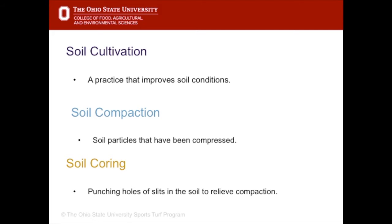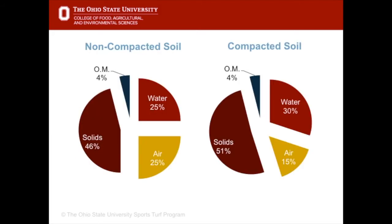Soils tend to compact naturally over time but will become compacted much sooner on high traffic areas like athletic fields. The most common method of relieving soil compaction is by soil coring. Soil compaction occurs when the percent soil solids and the water holding pores increase while the percent air pores decrease compared to an uncompacted soil.